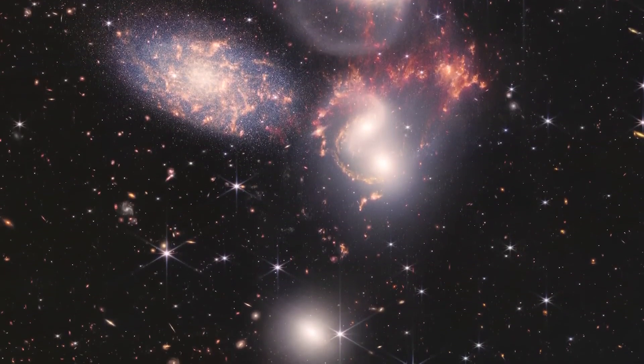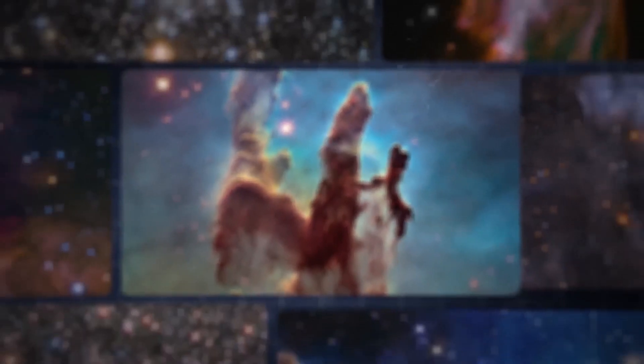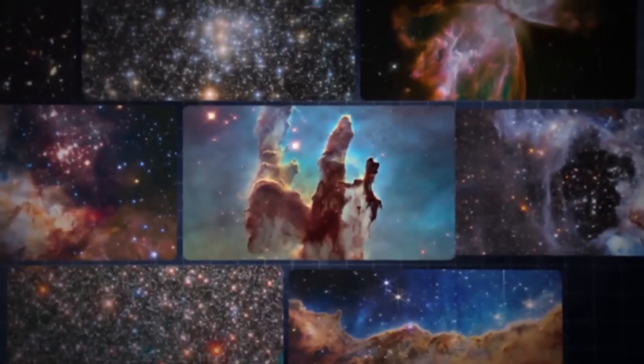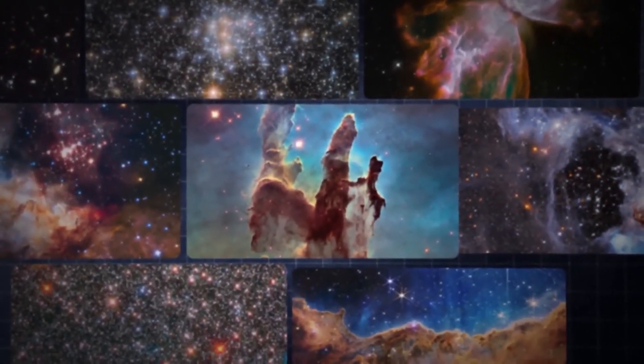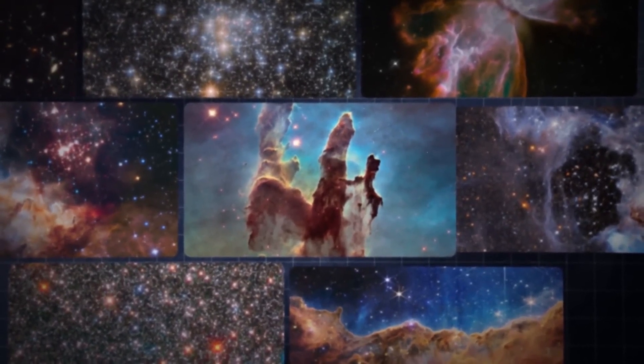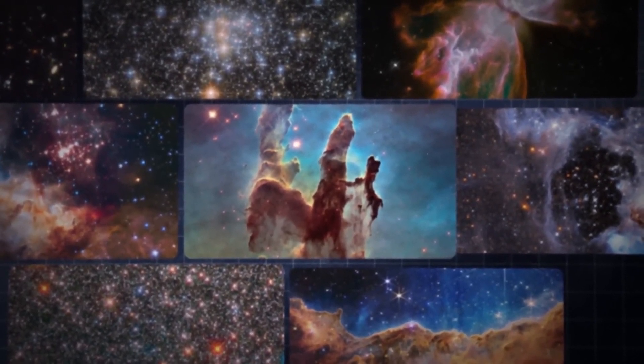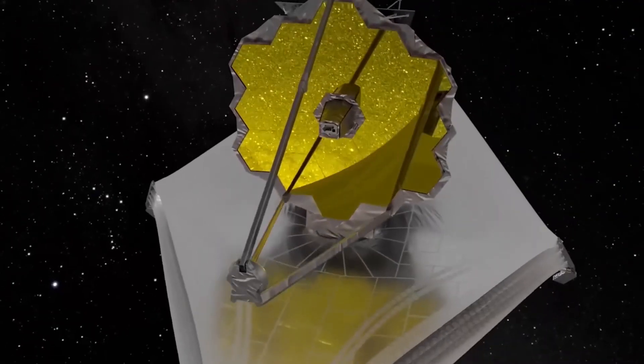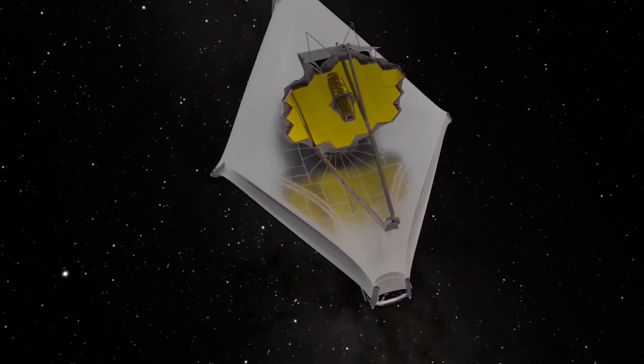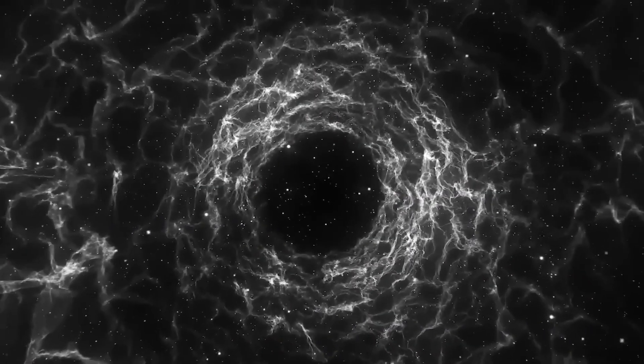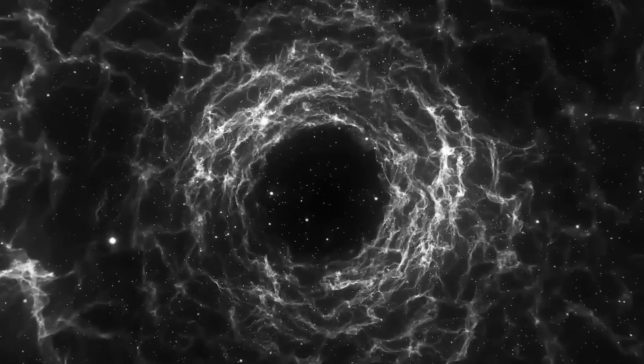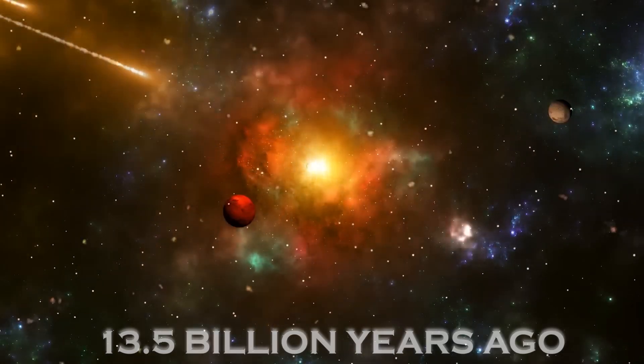This telescope has a special power: it can see things that are invisible to our eyes using infrared light. It captures the faint glow of ancient stars and galaxies that have existed for eons. This means that the JWST can literally take us back in time, providing a glimpse of what the universe was like some 13.5 billion years ago.